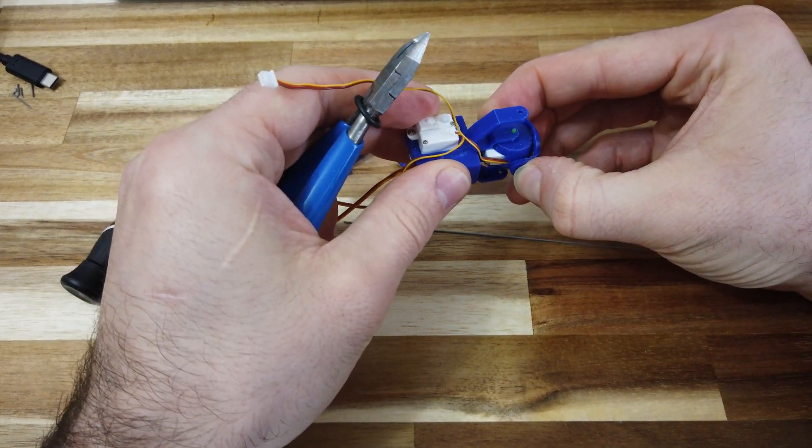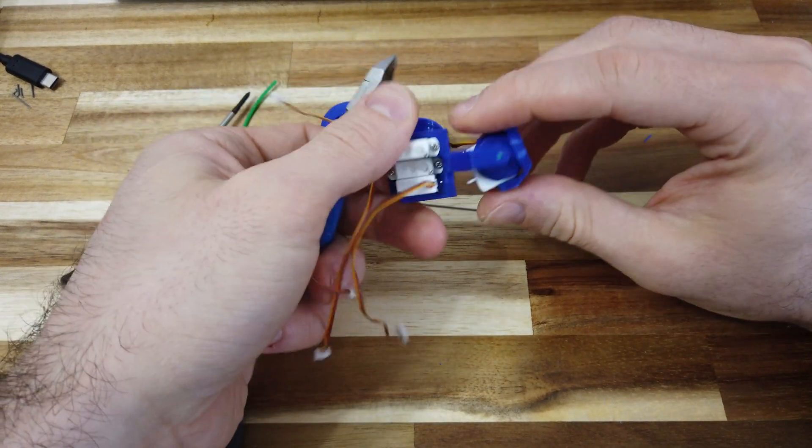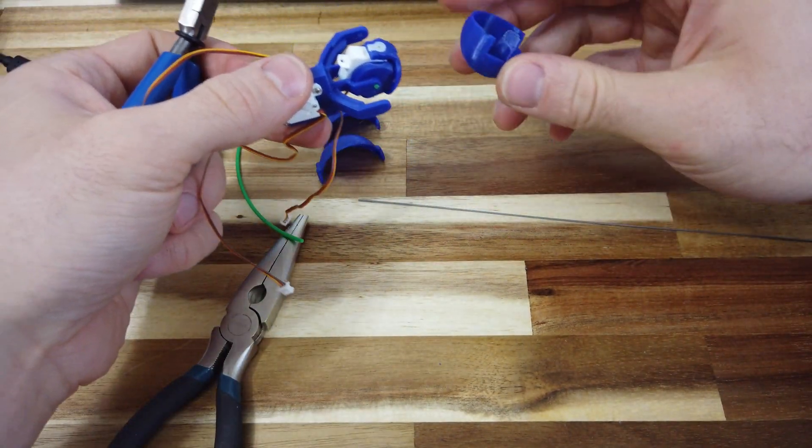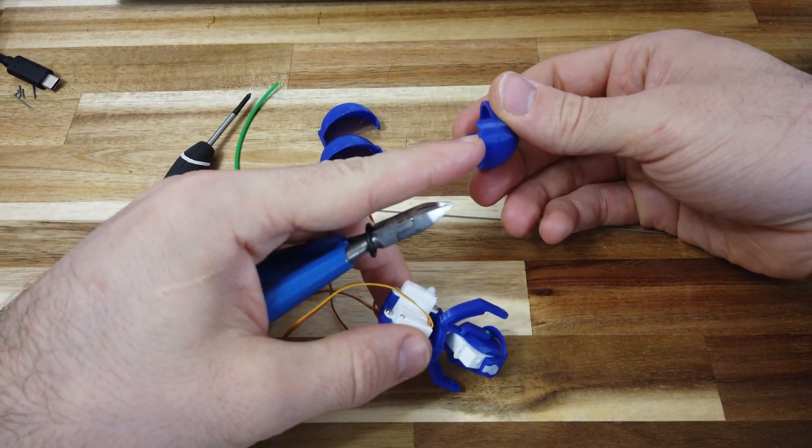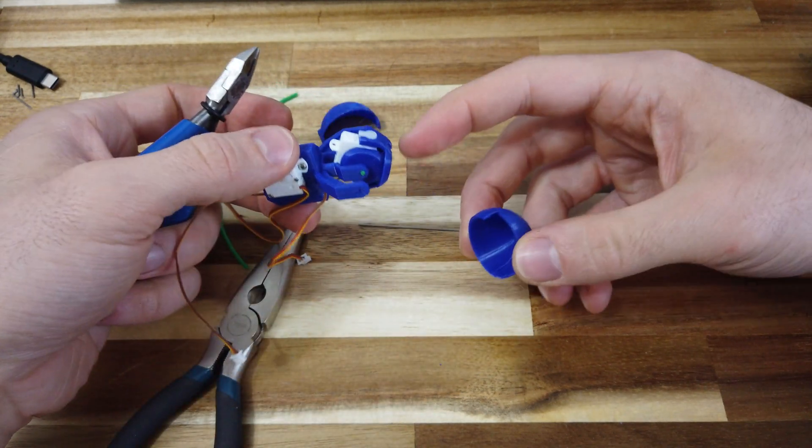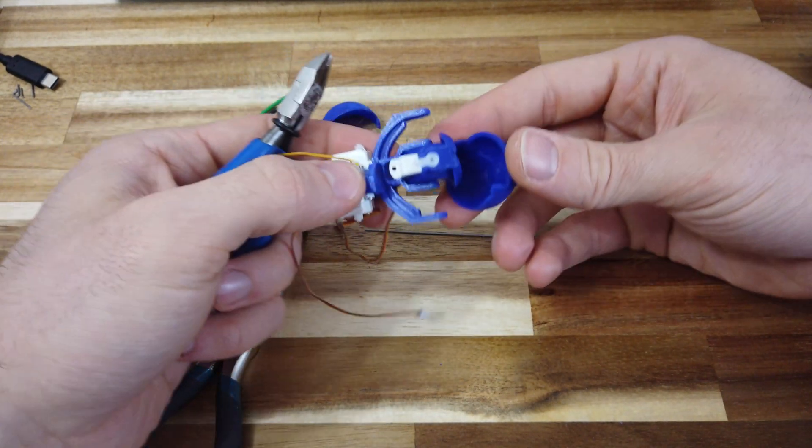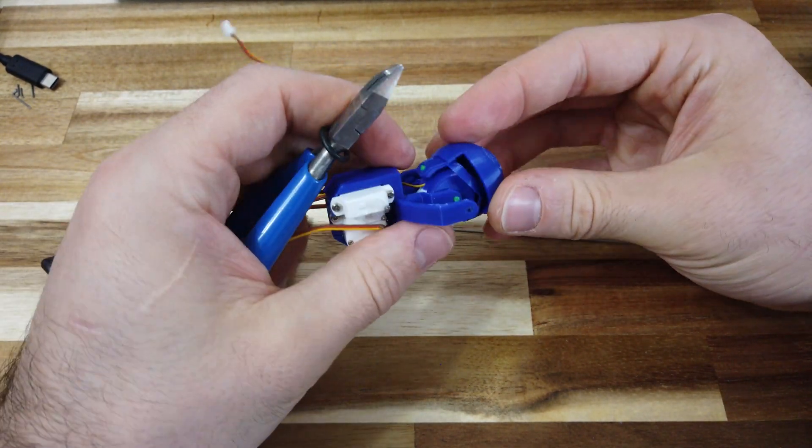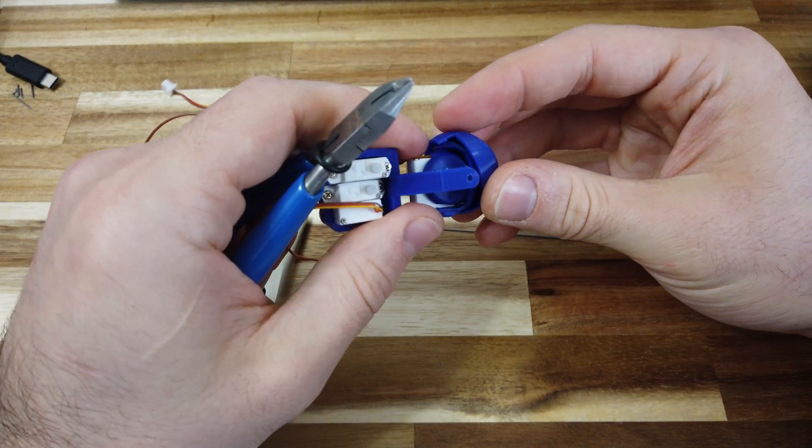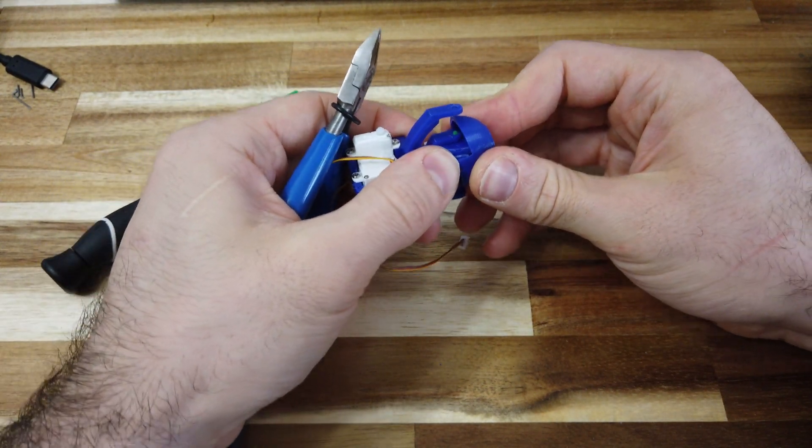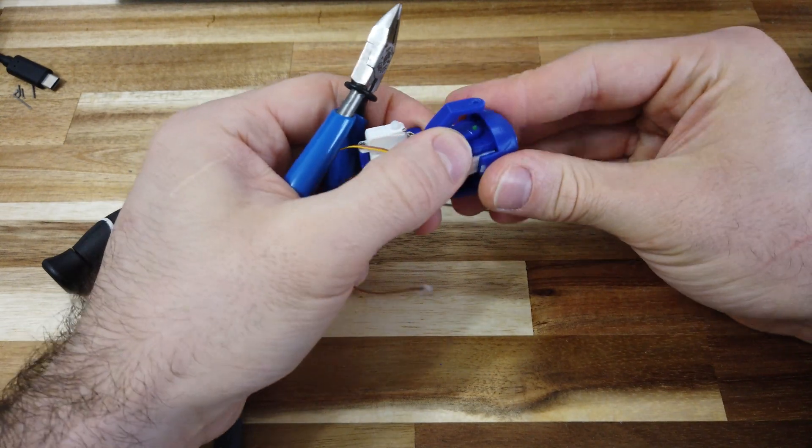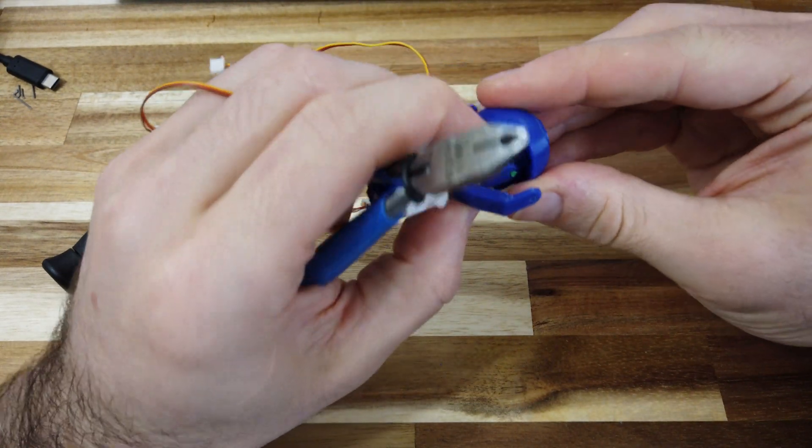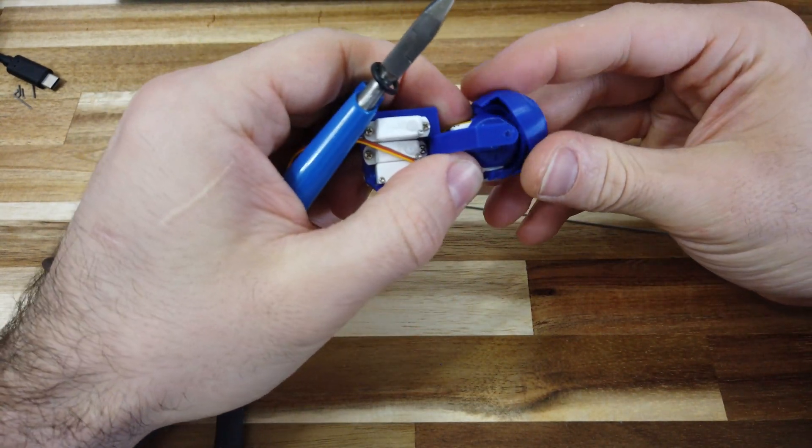If you want at this point, you can install the eyeball, so this component. On the top, there is a notch, and that is the side with the servo horn. I find it easiest to kind of hook the bottom in, and then rotate it, and snap it in. You'll feel when it seats. I didn't do it right there.